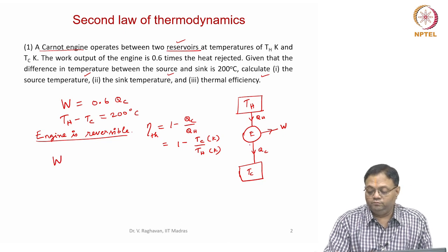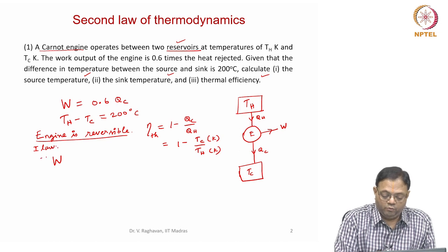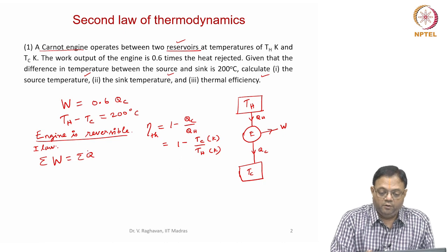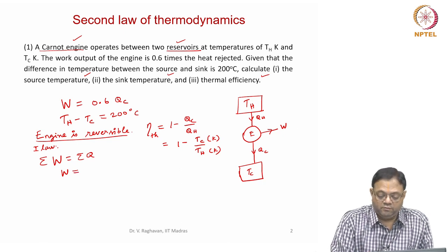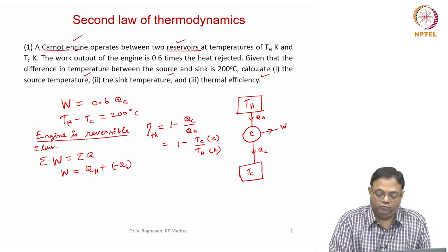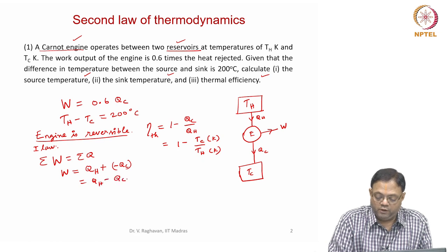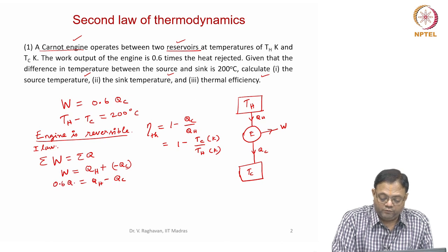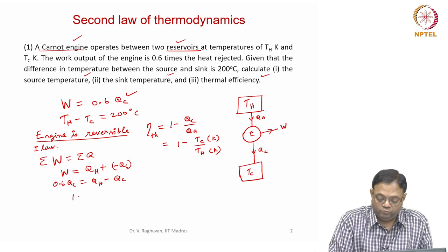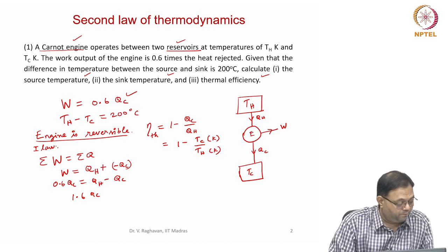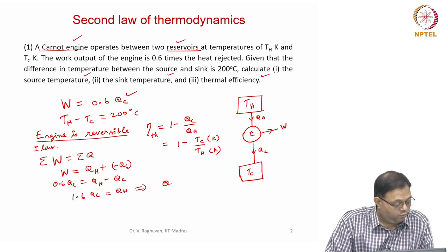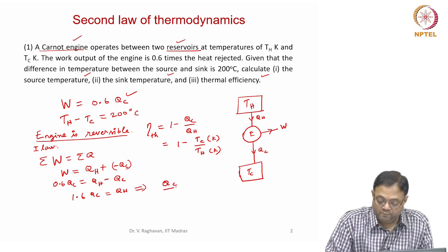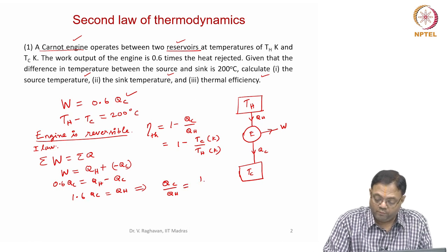From the first law, sigma W equals sigma Q for the cycle, because the Carnot engine operates in a thermodynamic cycle. So W equals QH minus QC. Now W is 0.6 times QC as given in the problem. So we can write QH equals 1.6 QC, or QC/QH equals 1/1.6.